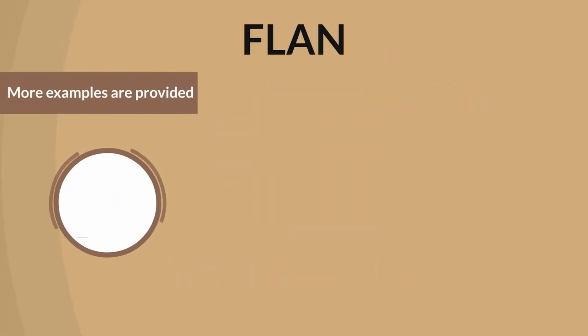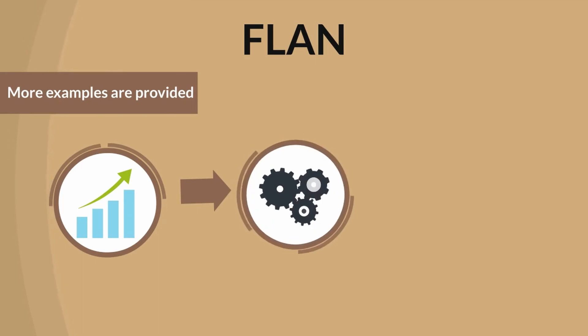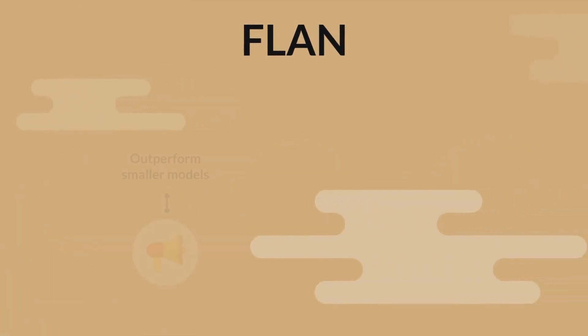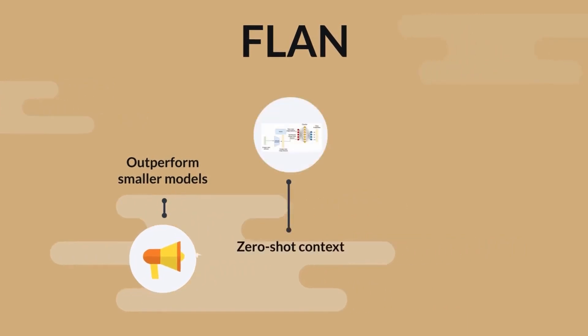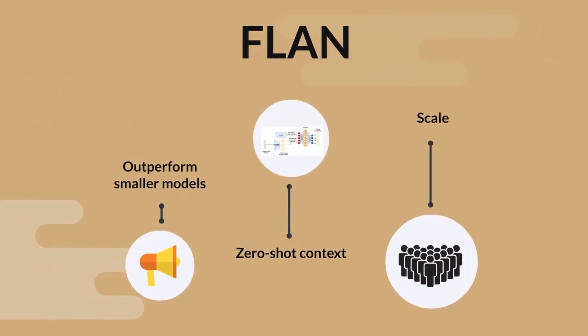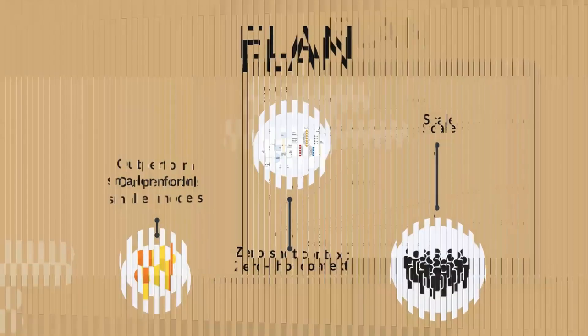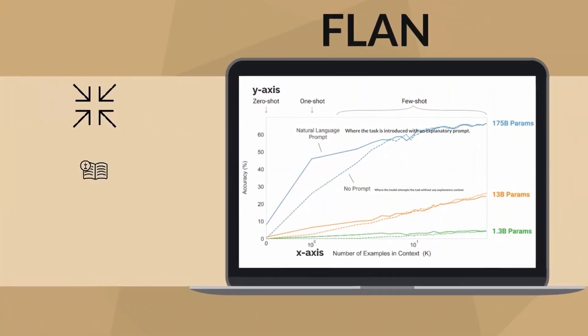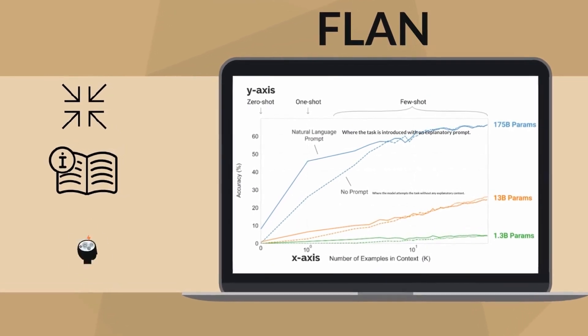As more examples are provided, the performance continues to improve, highlighting the efficiency of the instruction tuning method. This ability of Flan to significantly outperform smaller models, even in a zero-shot context, underscores the importance of scale in language model performance. The graph serves as a compelling visualization of how model size and instruction tuning combine to enable more human-like understanding of language and tasks by AI models.